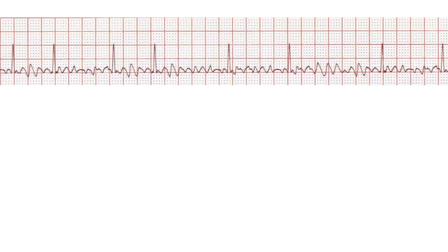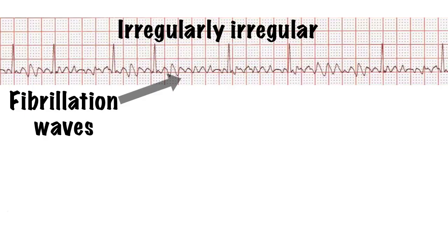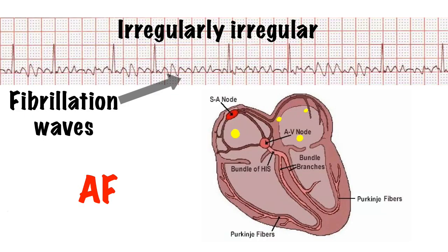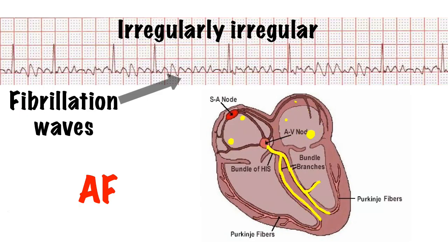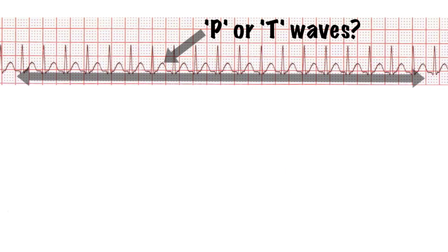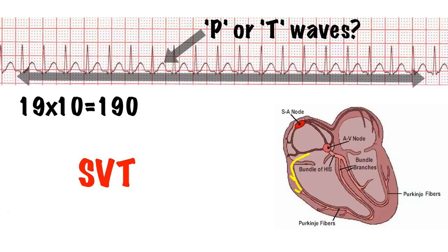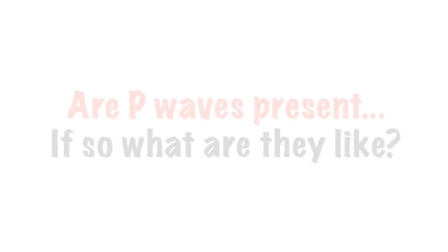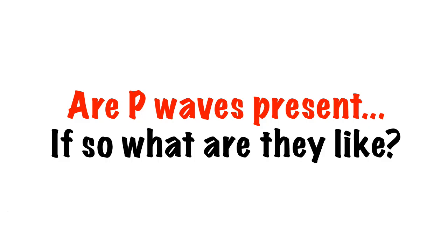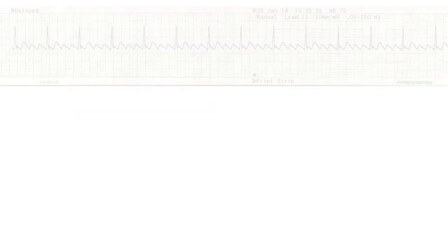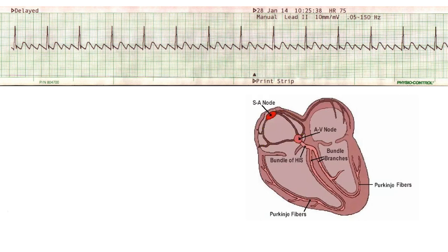Absence of discernible P waves with an irregular QRS complex is almost certainly going to be atrial fibrillation, where the atria are firing rapidly and randomly and the AV node gets overwhelmed and only allows some impulses through. An apparent absence of P waves with a narrow complex tachycardia could be supraventricular tachycardia. A sawtoothed shape to the P wave may indicate atrial flutter. In atrial flutter, the SA node is firing at around 300 beats per minute.